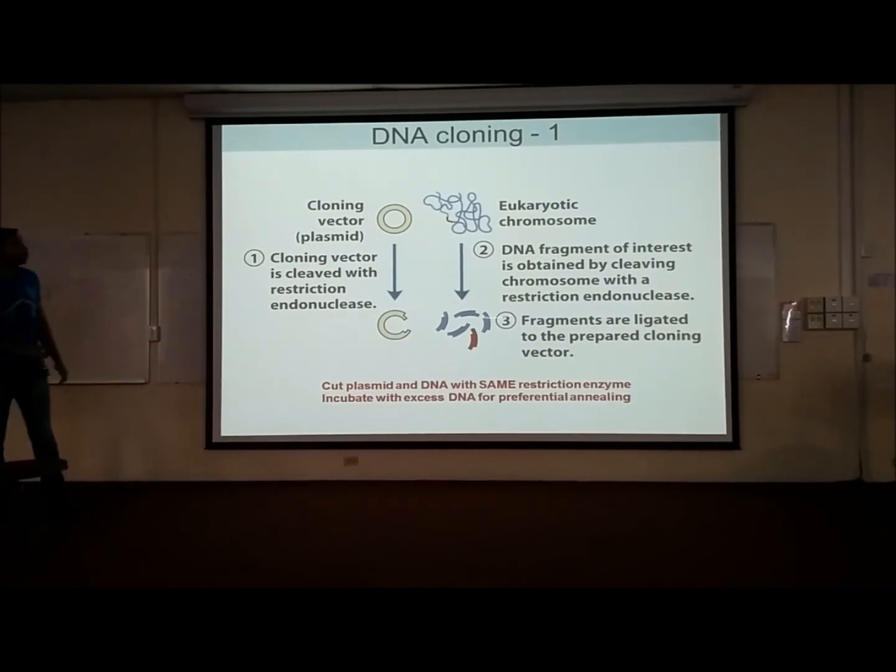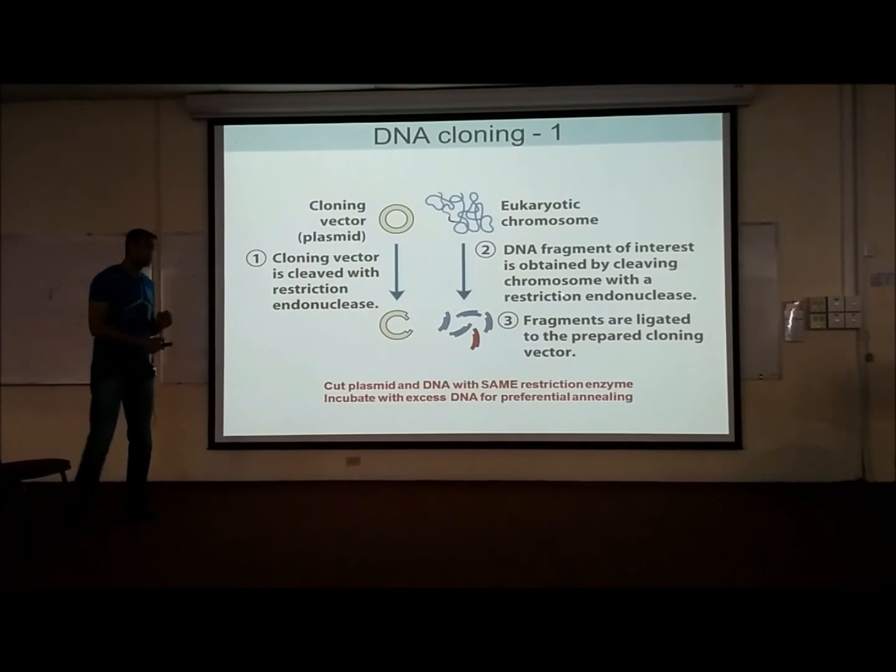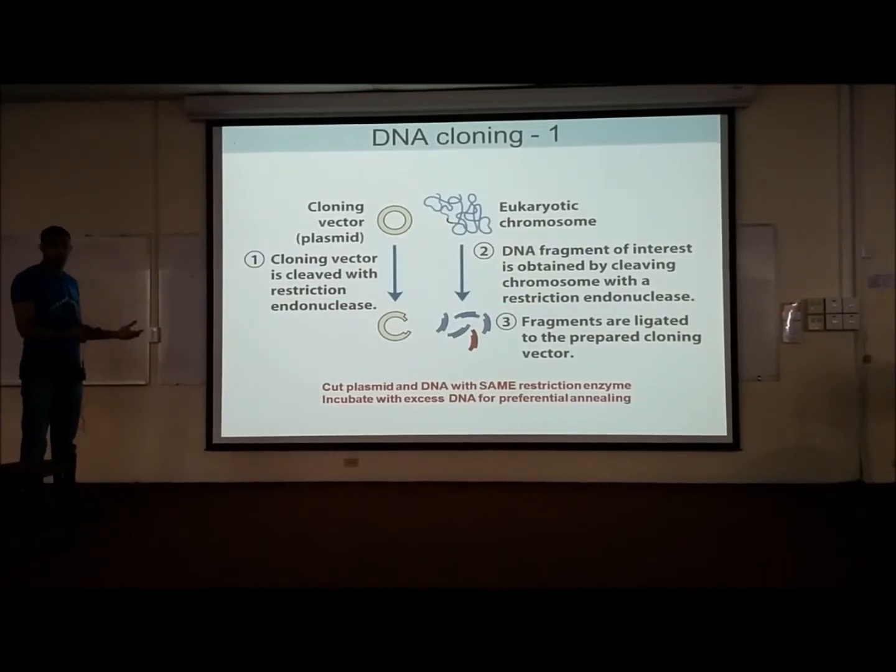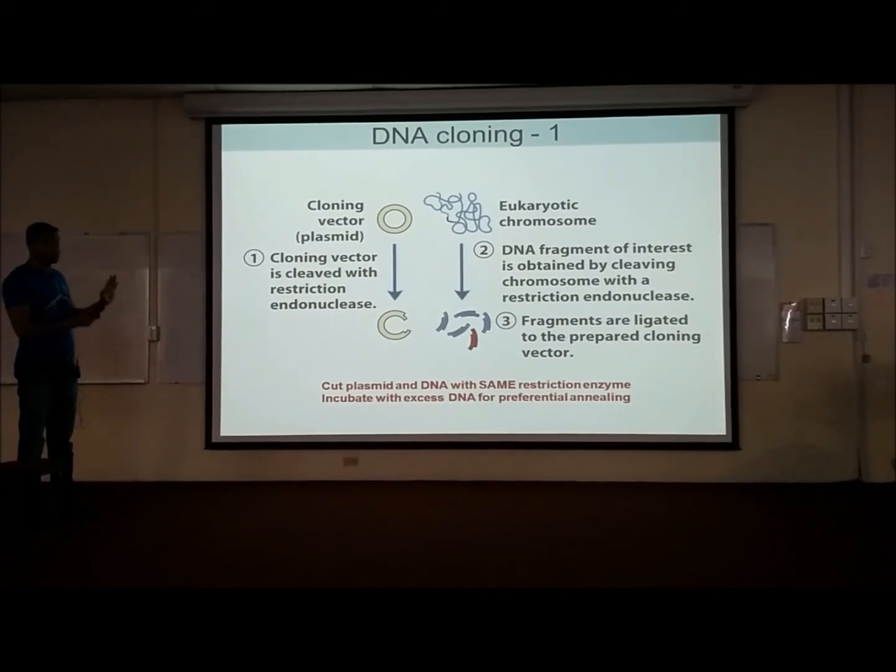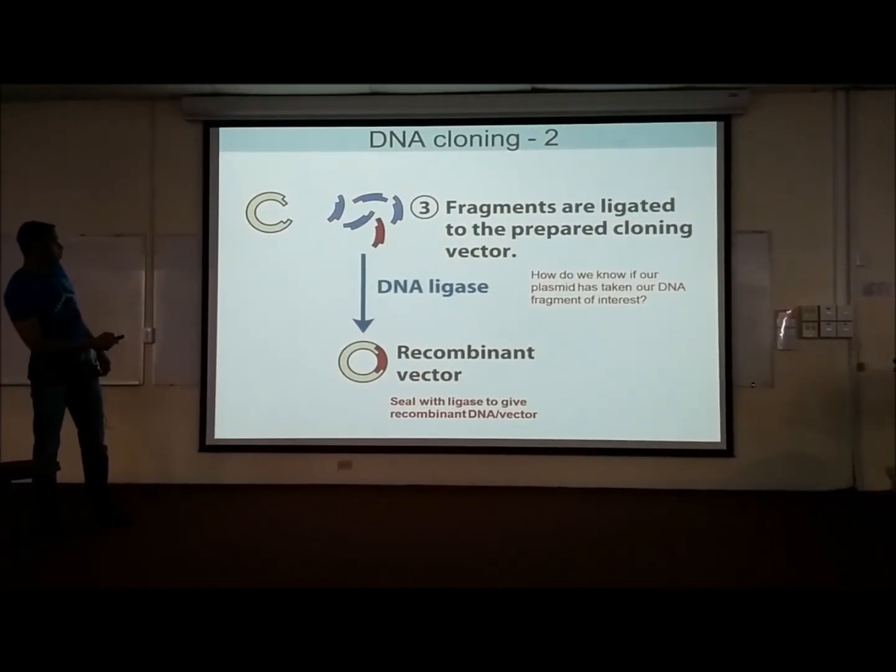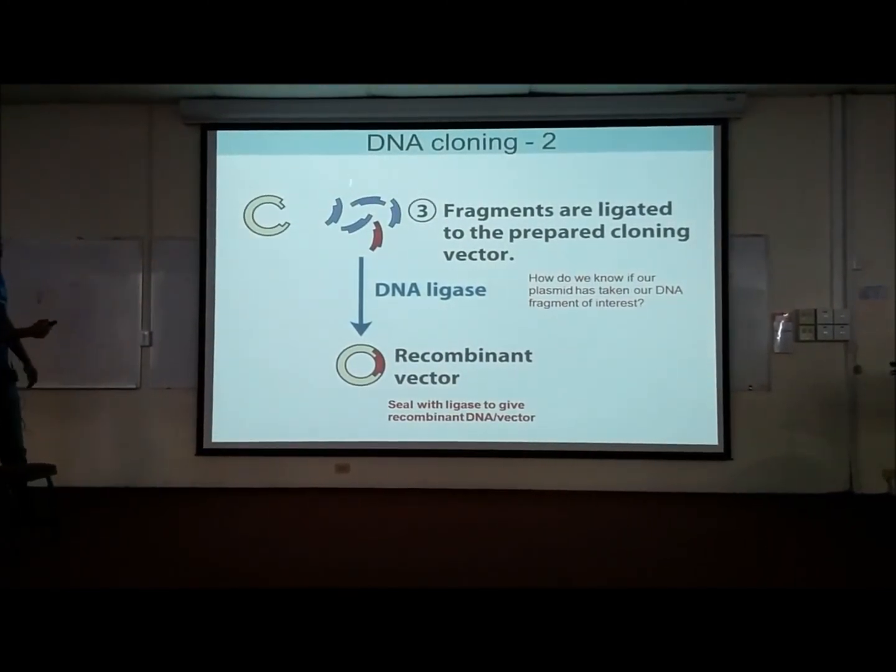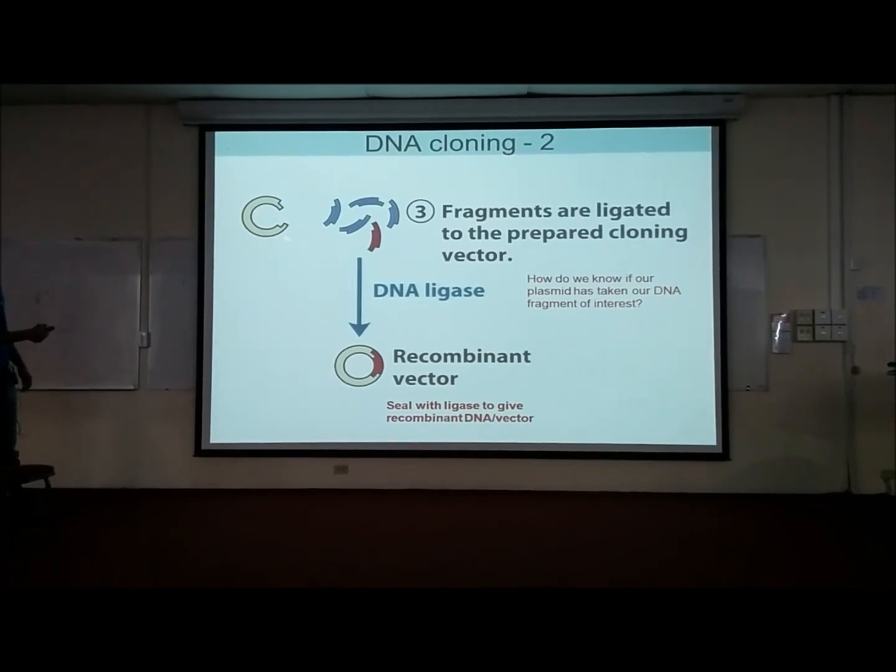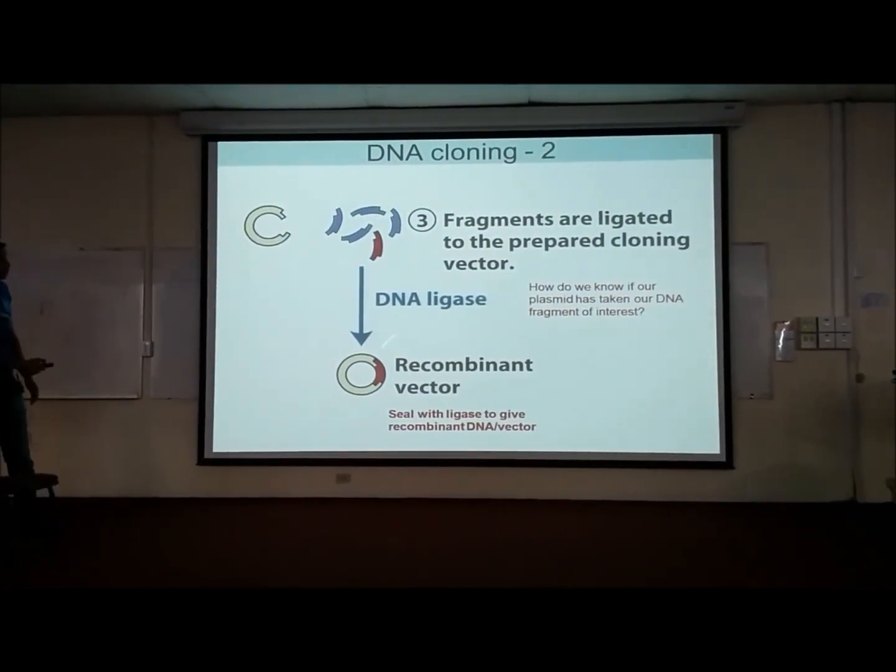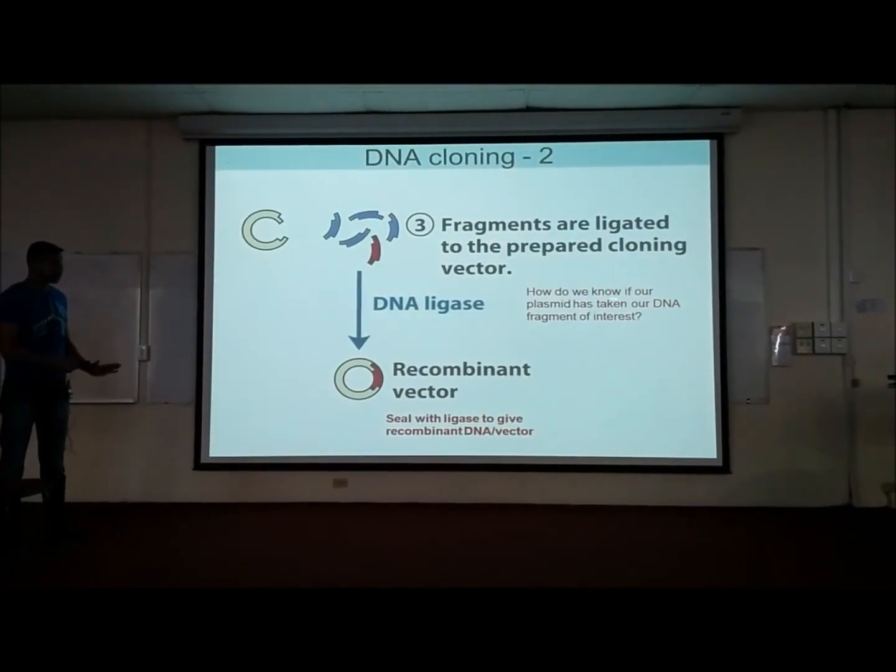Now, what do we use to cut the vector? Same one. The same restriction enzyme. So they have the same sticky ends and they can insert at the same place. Then all our fragments that we cut with a restriction enzyme, we expose it to the plasmid and we're going to get a recombinant vector. Some of them will have a gene of interest. Some of them won't have our gene of interest.